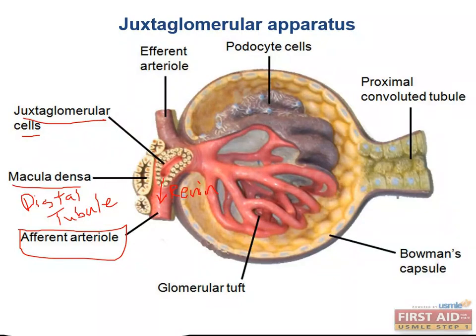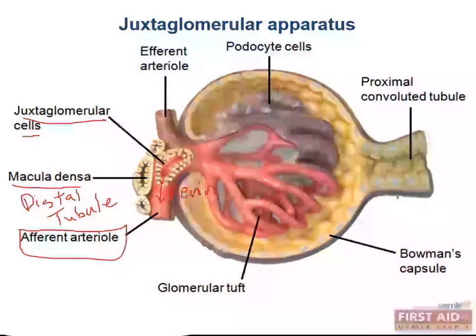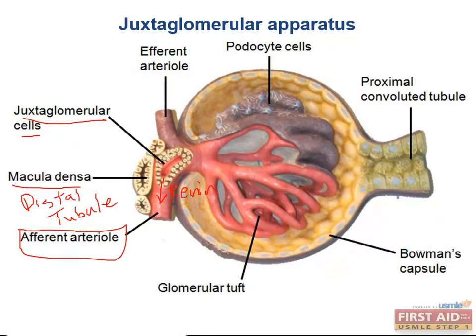The macula densa cells can directly stimulate the JG cells to release renin if they detect low sodium delivery to the distal tubule. The JG cells are modified smooth muscle cells in the afferent arteriole — so in which layer are they found? They're found in the tunica media with the other smooth muscle cells.